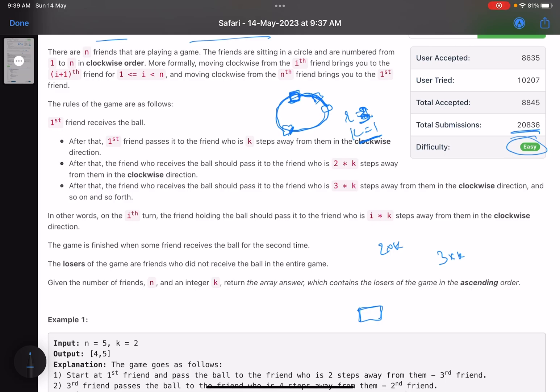As soon as anyone receives the ball twice, the game ends. Now what do you have to tell? Who are the losers of the game? As soon as the game ends, whenever a player receives the ball for the second time, at that particular point of time, who are the players who have not received the ball even once? Those players are the losers. You have to return an array in ascending order telling who are the losers of the game.